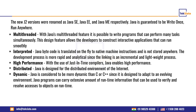Java is an interpreted language. Java bytecode is translated on the fly to native machine instructions and is not stored anywhere. The development process is more rapid and analytical since the linking is an incremental and lightweight process. The interpreter in Java reads your bytecode and is used for execution of the bytecode. Java also has high performance — with the use of just-in-time compilers, Java enables high performance.